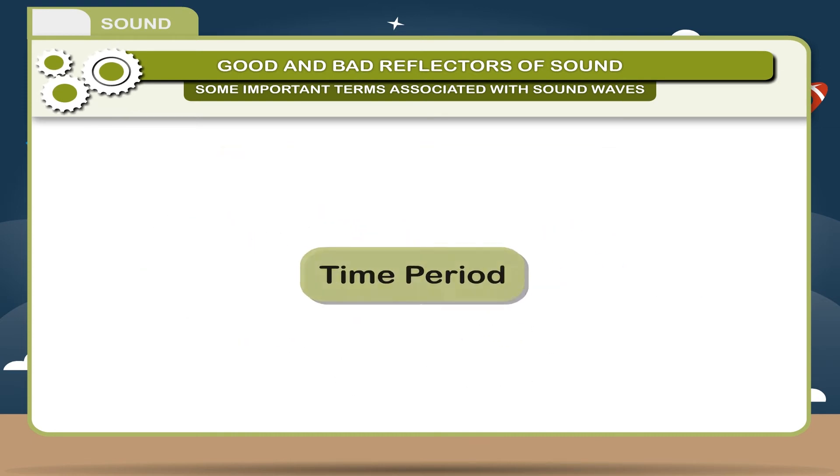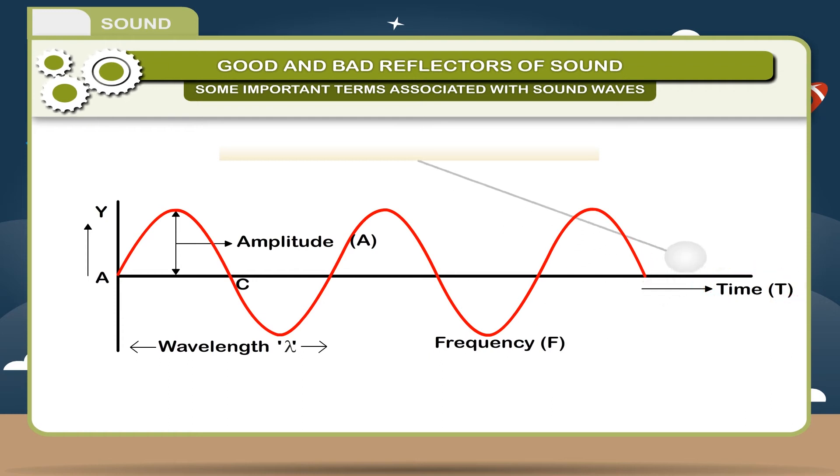3. Time period: The time taken by a wave to complete one oscillation is called time period. Its unit is second. It is denoted by T.